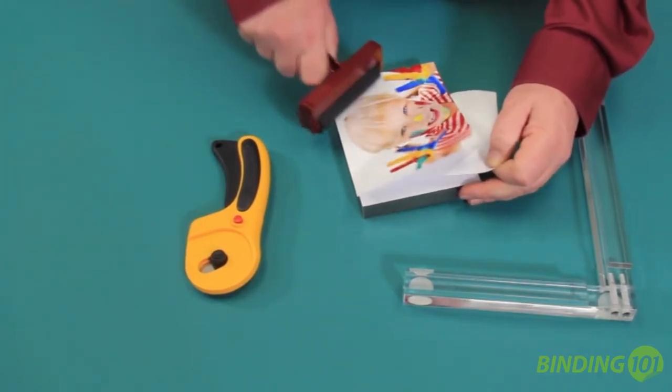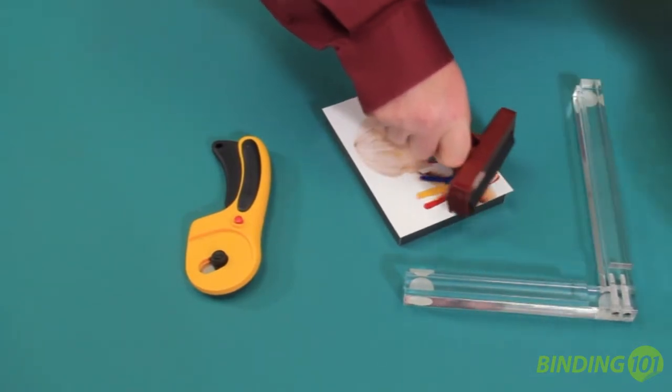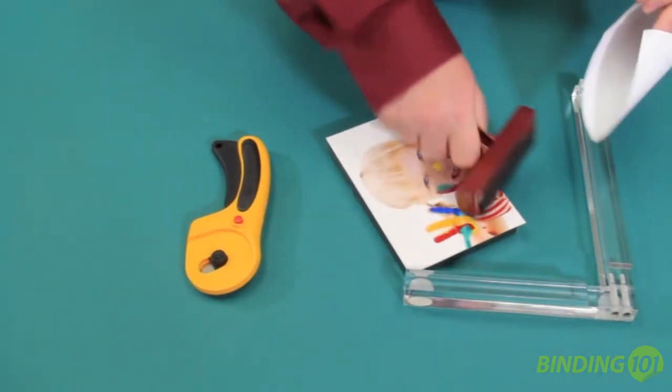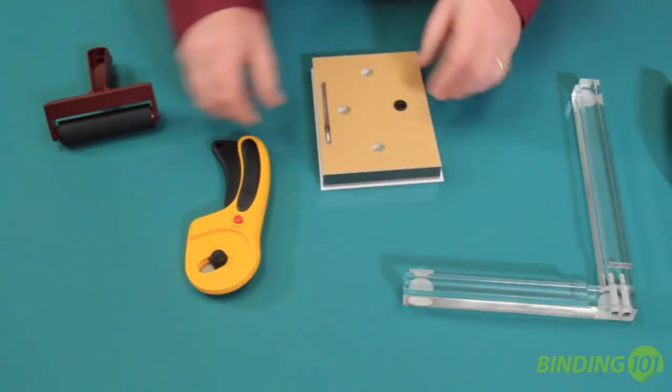Now taking your roller, simply roll the picture as you're releasing the liner. Now you've got your picture mounted on your frame.